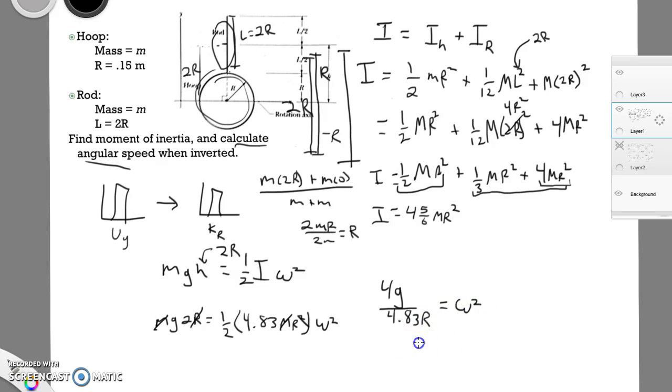Equals omega squared. We'll take the square root. So omega equals the square root of 4G over 4.83, and the R is 0.15. That was given to us right here.